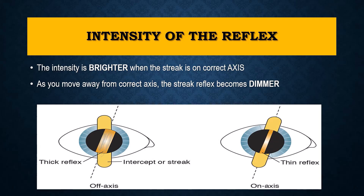The third property of the reflex in the astigmatic eye is intensity. The intensity will be brighter when the streak is on the correct axis — similar to what happens at neutralization. As you move away from the correct axis, the reflex becomes dimmer. So in the first picture the reflex is broader and also dimmer because the streak is not aligned properly, whereas in the second picture, with the streak aligned to the reflex, you get a bright and narrow reflex.